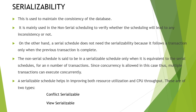We now come to the core part of this video lecture — Serializability. Serializability is a mechanism for checking whether the database is maintained in a consistent state or not. In a Serial Schedule, the database maintains consistency at all times. But in a Non-Serial type, due to concurrent access, the database may not be in a consistent state. A Non-Serial Schedule is said to be equivalent to a Serial Schedule only when it is equivalent to a Serial Schedule for N number of transactions. A Serial Schedule also helps in improving both resource utilization and CPU throughput. Serializability is further categorized into Conflict Serializability and View Serializability.